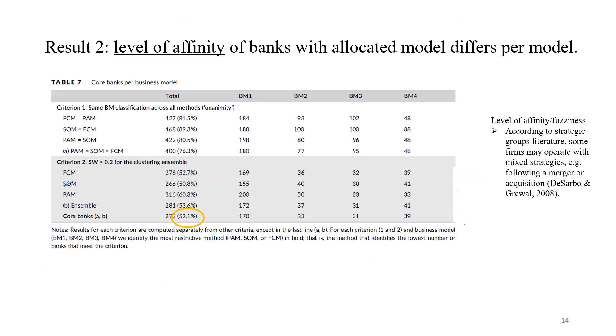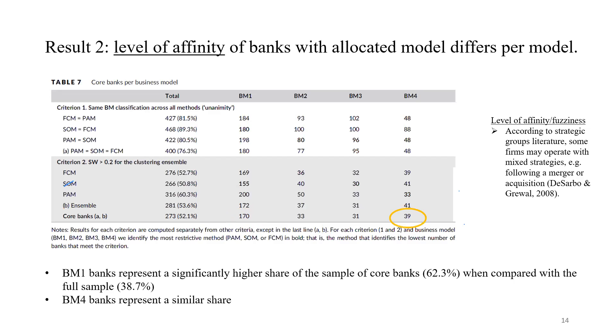Just to briefly note two other results. First, the result related to the core banks and the level of affinity of banks with more than one business model. We have two business models - business model one and business model four - for which the banks tend to follow closely the prototypical configuration because the number of core banks is relatively high in comparison with the total sample, whereas these two other business models we found were more fuzzy. This may have some implication in terms of how they must be supervised because they are less clearly defined.